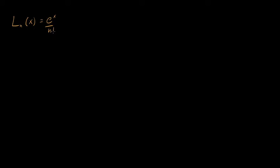In this video I'm going to introduce Laguerre polynomials. They're defined as L sub n — the nth Laguerre polynomial is given by e to the x over n factorial times the nth derivative with respect to x of x to the n times e to the minus x. The way to visualize this is: after taking n derivatives, what is the polynomial coefficient of e to the minus x?